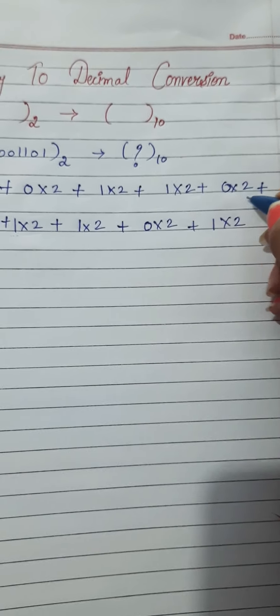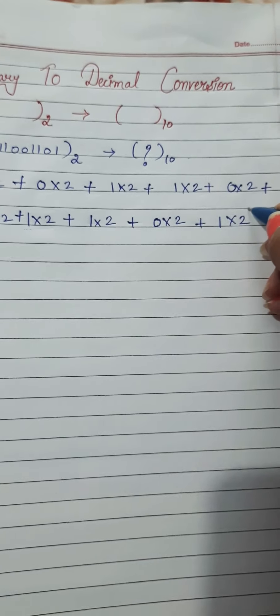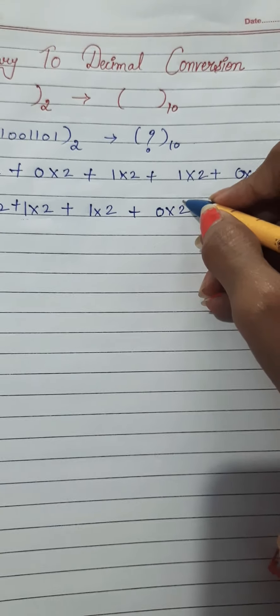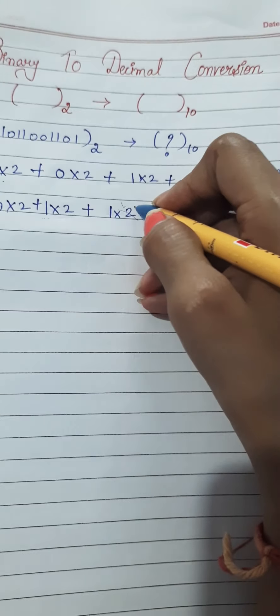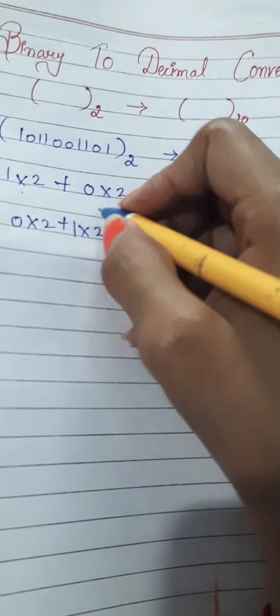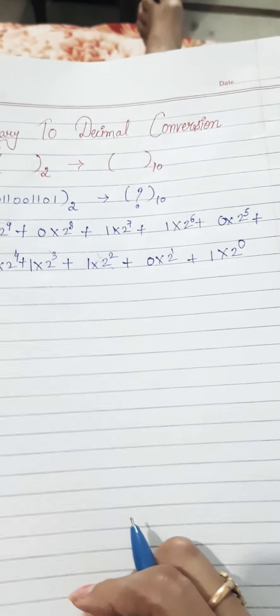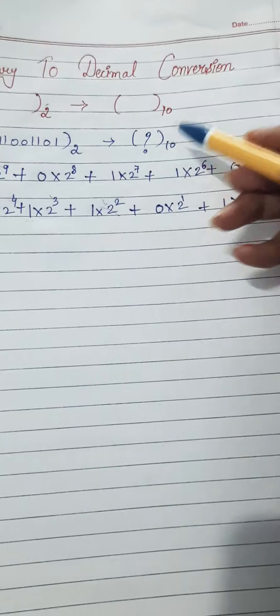Now you have to put the power for 2, starting from 0 on the rightmost digit: 0, 1, 2, 3, 4, 5, 6, 7, 8, and 9. This will help you to convert the number from binary to decimal.